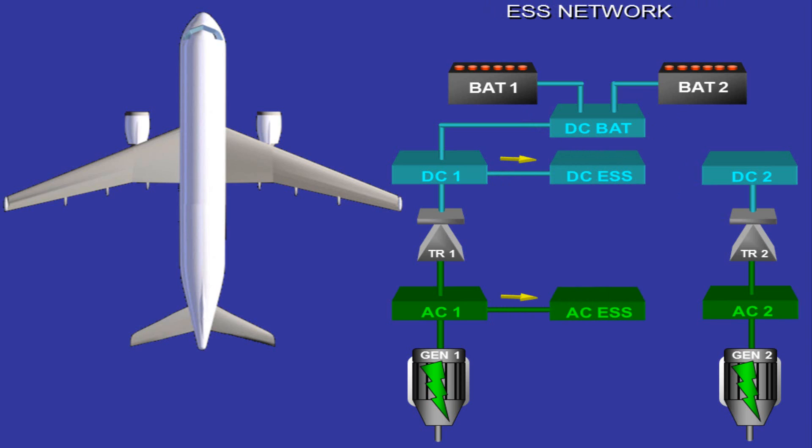The electrical system also includes two essential buses. One is the AC essential bus, fed by AC bus 1, and the other is the DC essential bus, fed by DC bus 1. These buses are used to supply the most important aircraft systems.